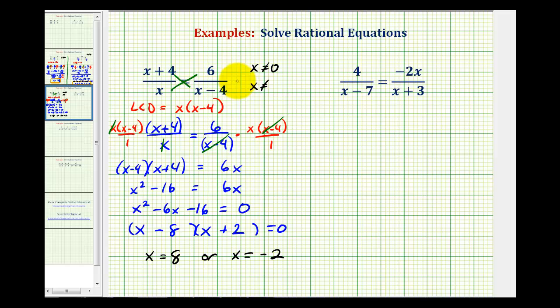X also can't equal 4 because it would make this denominator equal to zero. Since neither of these values are the solutions we found, these two solutions are correct.